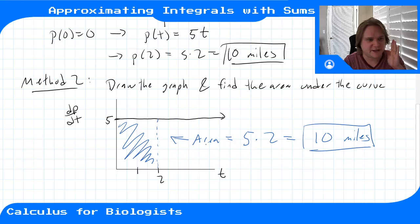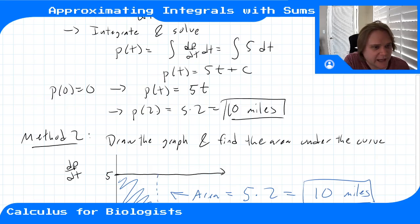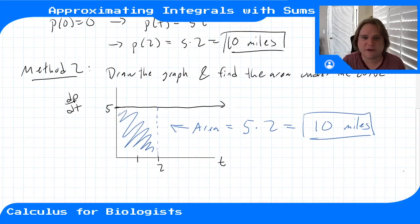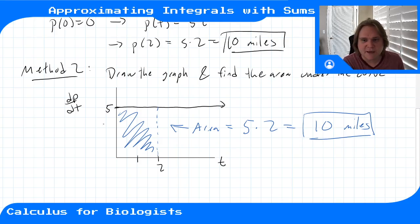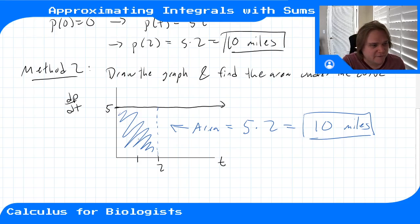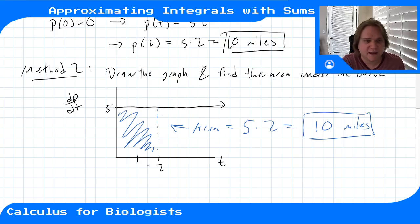The area is the area of a rectangle: height five times width two, which gives 10 miles. When doing a definite integral — integrating from one bound to another and asking how much the position changed over two hours — you can draw the graph of the function you're integrating and calculate the area underneath. Here it's a nice rectangle, so we just multiply height and width.